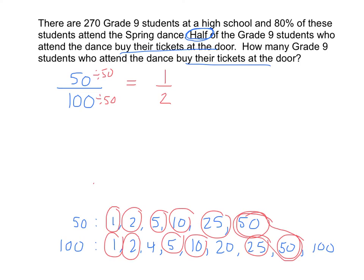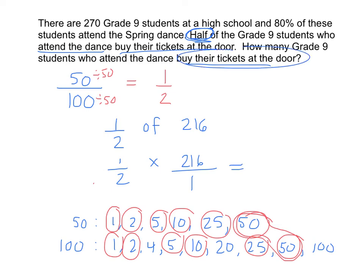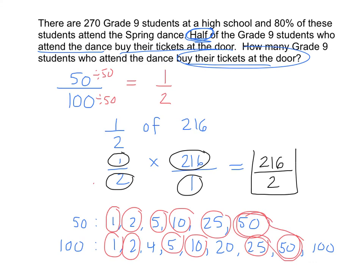So now let's figure out our equation. Half of the students who attend the dance buy their ticket at the door — so half of 216 buy their tickets at the door. We're going to solve this using fractions: 1 over 2 times 216 over 1. When multiplying fractions, we multiply the numerator by the numerator: 1 times 216 is 216. And then the denominator by the other denominator: 2 times 1 gives us 2. So 216 divided by 2 equals 108.